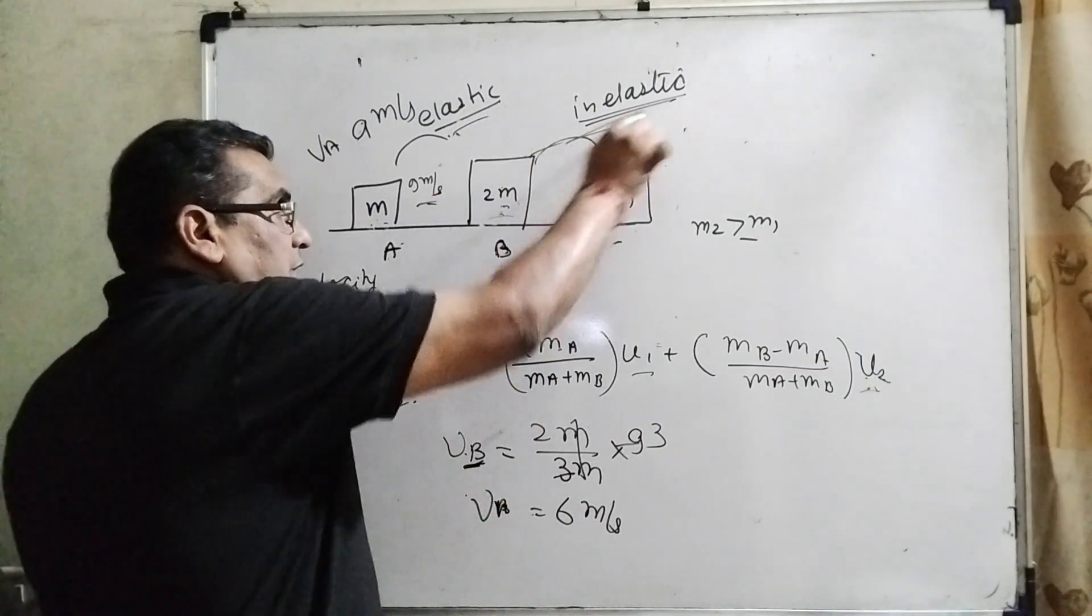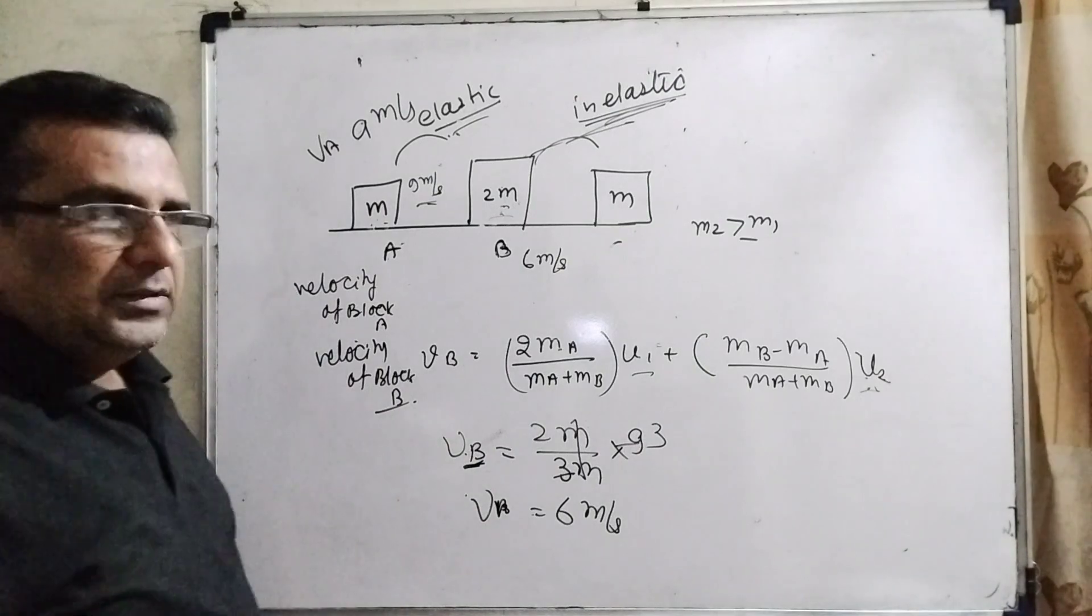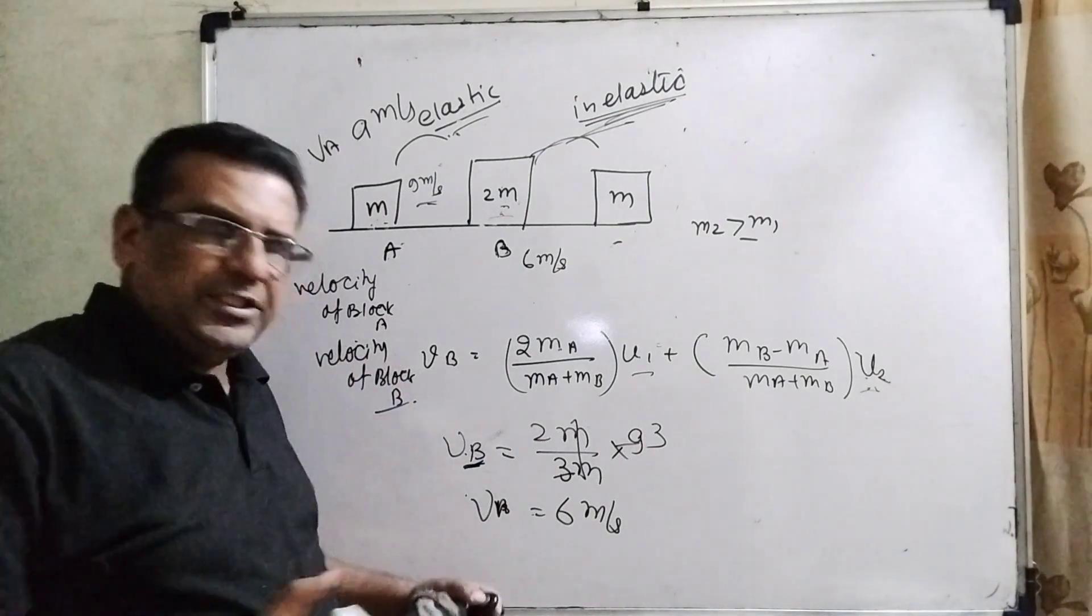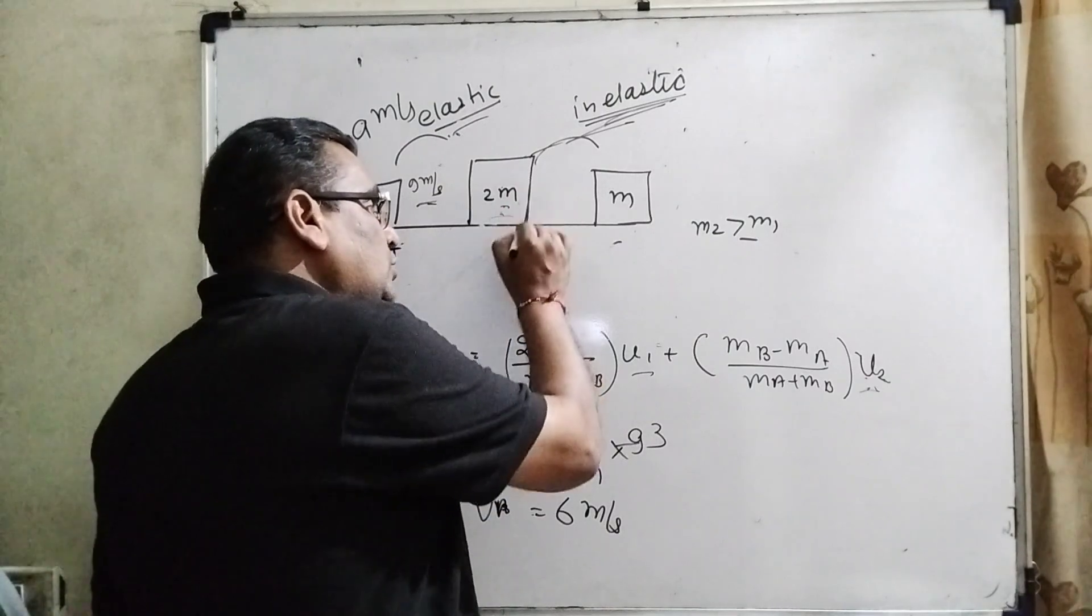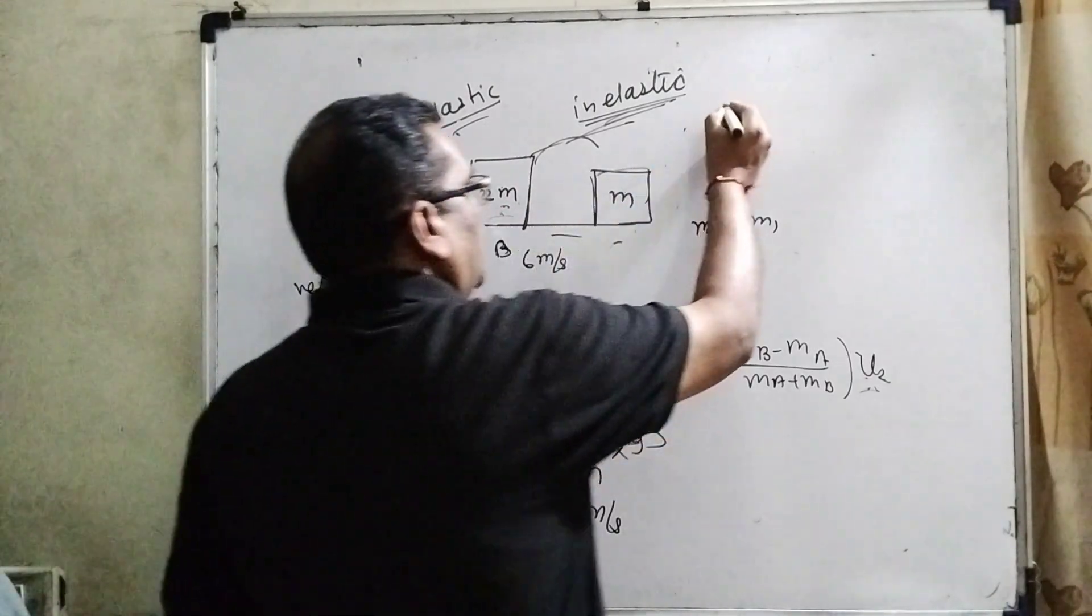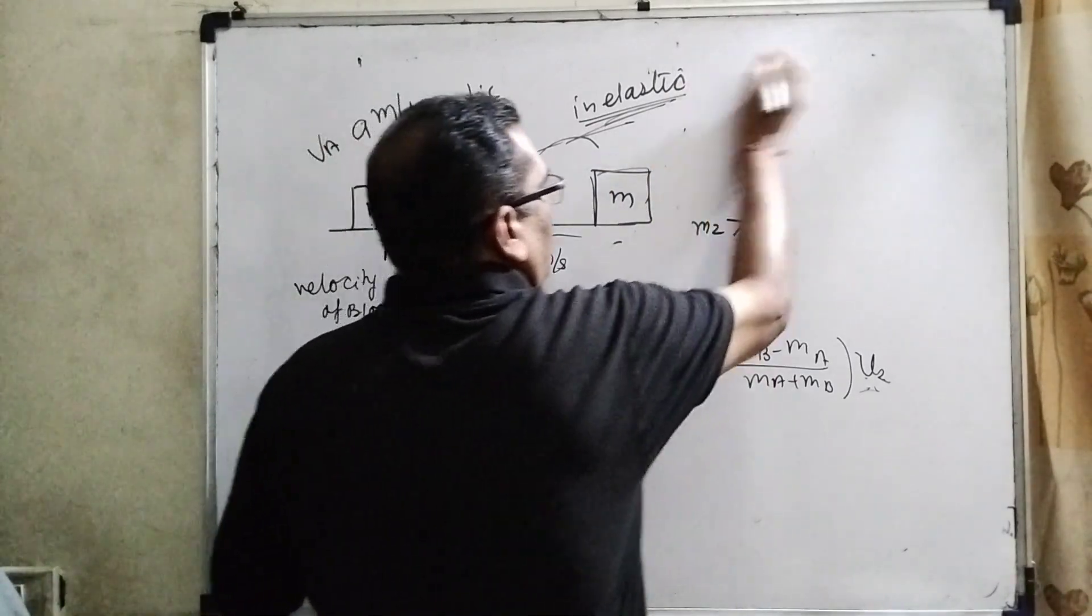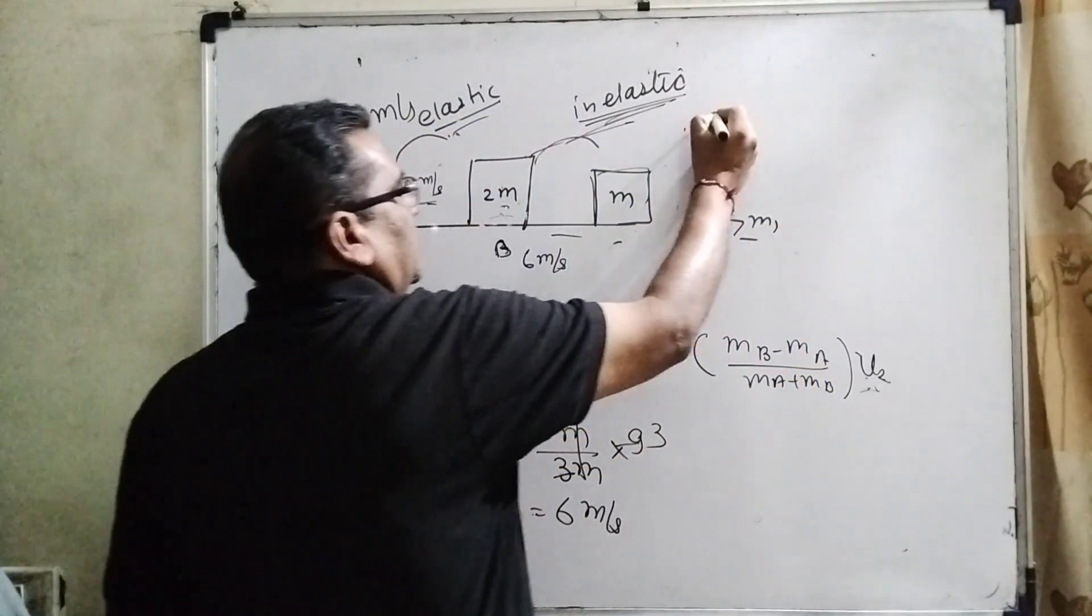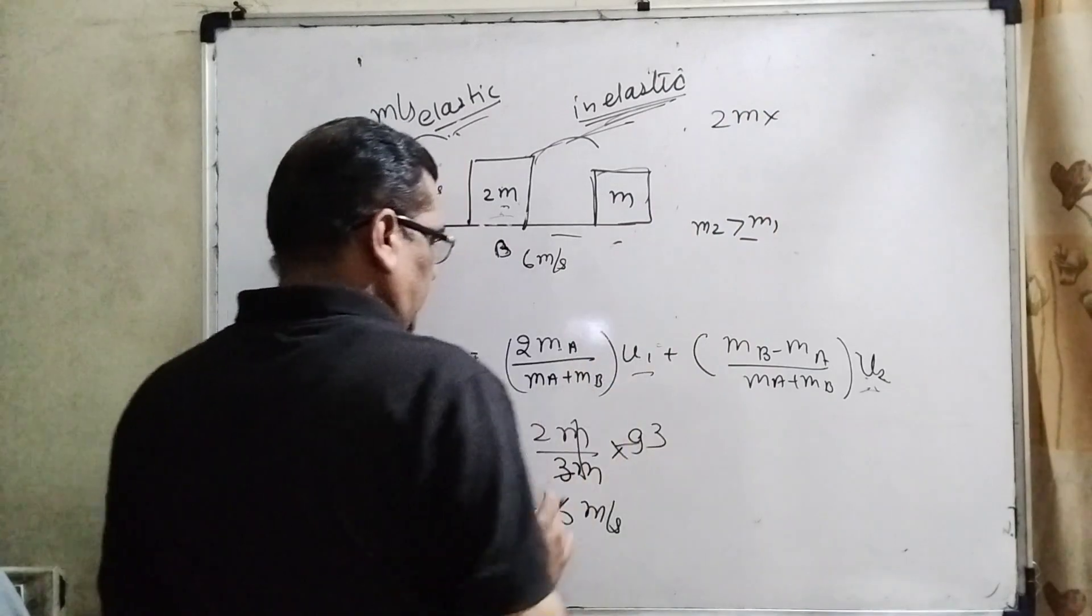Now this collision is inelastic. So therefore, they will stick together. Now we can use the laws of conservation of momentum. So here before collision, 2M and the velocity is 6.